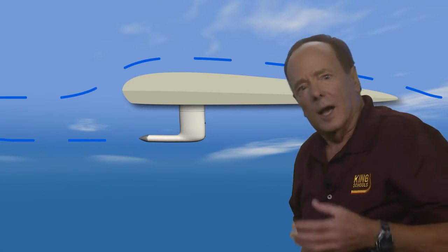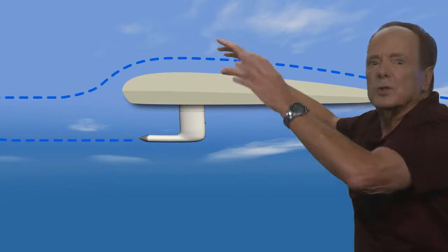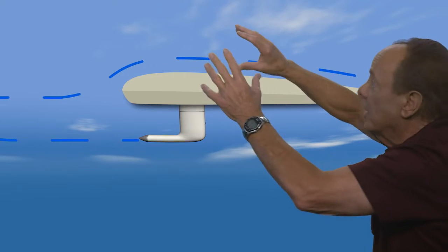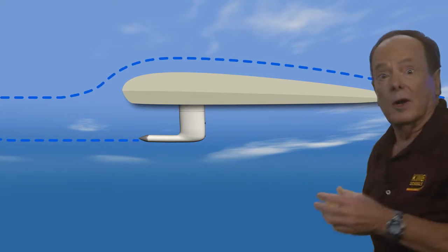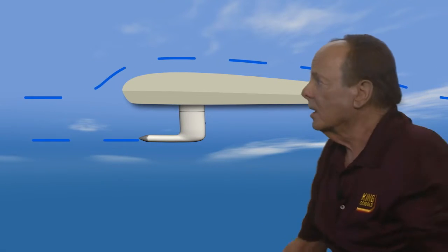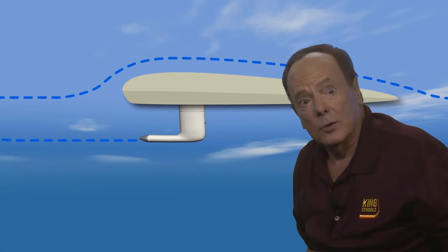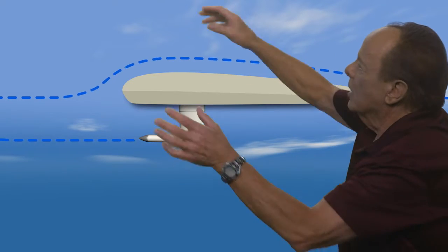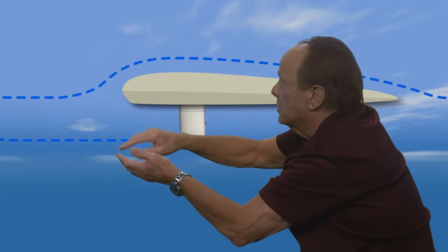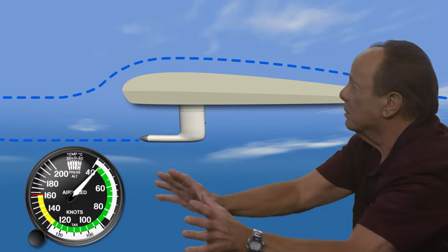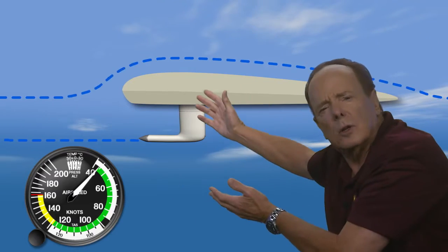Let's talk about higher altitude and how it affects the stall. As altitude increases, the air gets thinner. That thinner air affects the pitot tube in exactly the same way it affects the wings. So for a given weight, the airplane will stall at the same indicated airspeed at higher altitudes as it would at lower altitude. The air density affects the pitot static system in the same way it affects airflow over the wings, so the indicated airspeed at which an airplane stalls stays the same at higher altitude as at lower altitude.